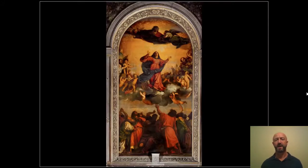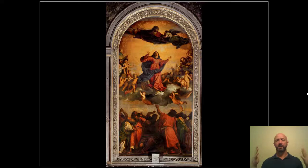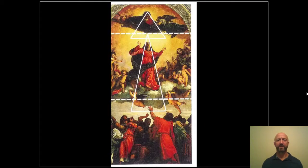Line also occurs compositionally. Composition — the way things are arranged in a work of art — uses implied lines. In Titian's The Assumption of the Virgin Mary, the implied lines are created by figures looking and figures reaching. The figures below reach up or look up toward the Virgin Mary in the middle, who also looks up toward God. Lines are created by these implied lines throughout the composition.